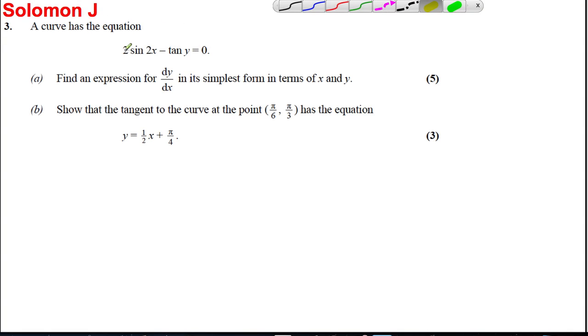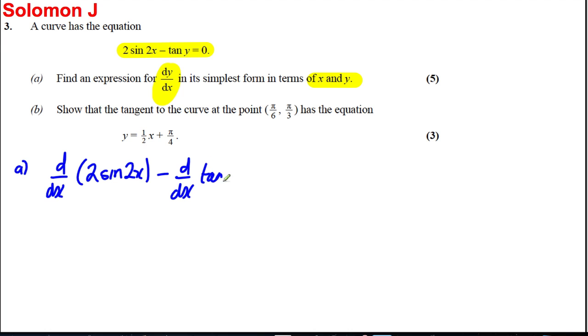So here is another question. We have a curve with the following equation and we want to find dy over dx in its simplest form in terms of x and y. We're going to, as always in part a, differentiate both sides with respect to x and I can break this up in one move as follows.